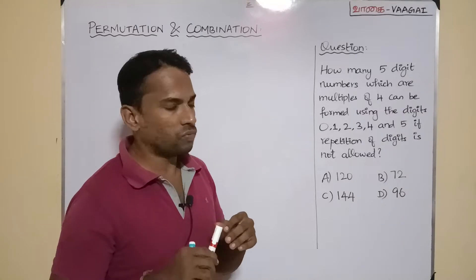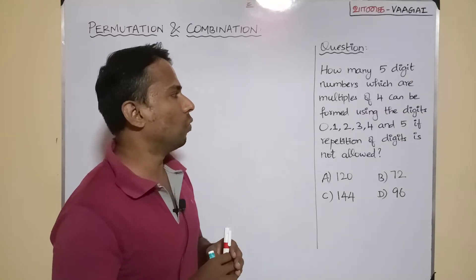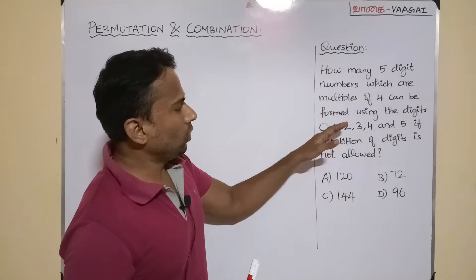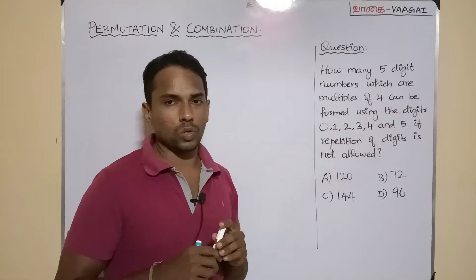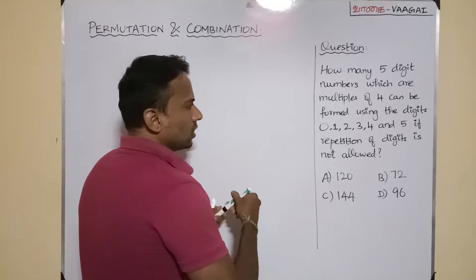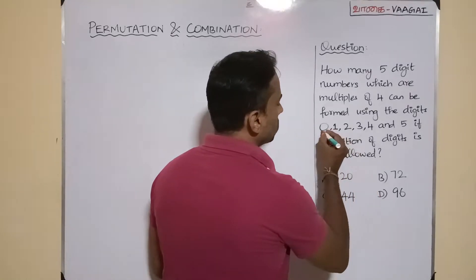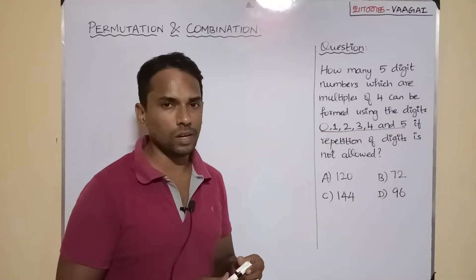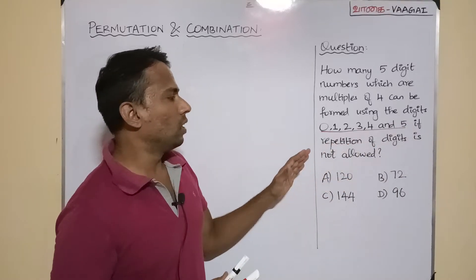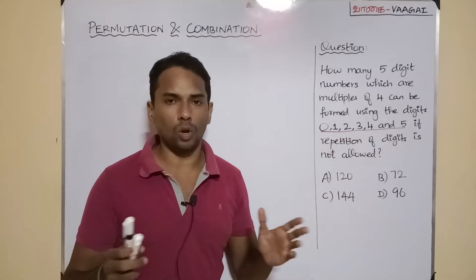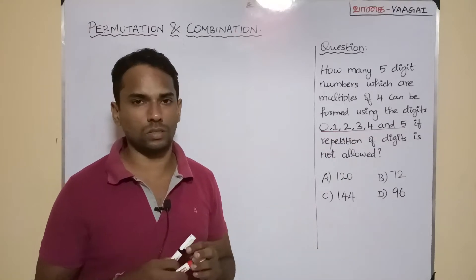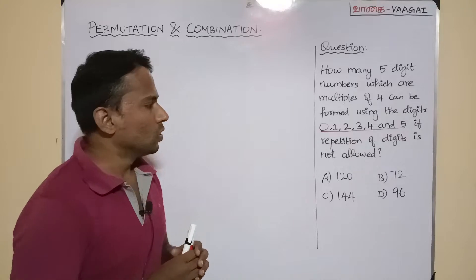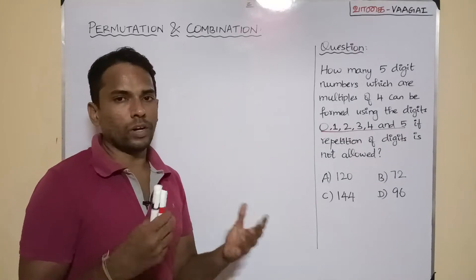We need to form 5-digit numbers which are multiples of 4 using the digits 0, 1, 2, 3, 4, and 5. So totally we have 6 digits, and the condition is that the repetition of digits is not allowed. We are not supposed to repeat the digits. This is an interesting question and the approach to solve it is also going to be interesting.